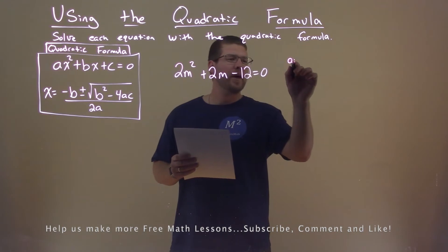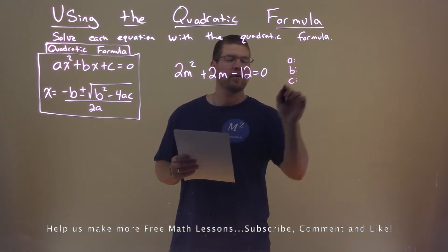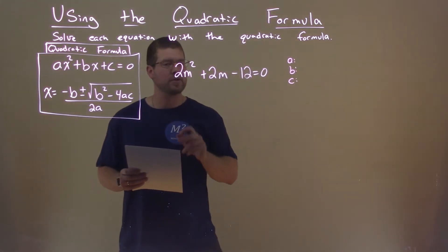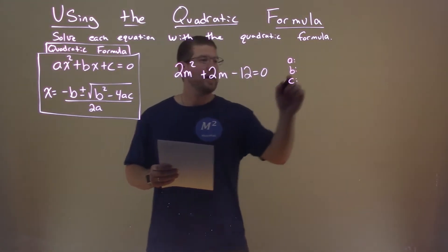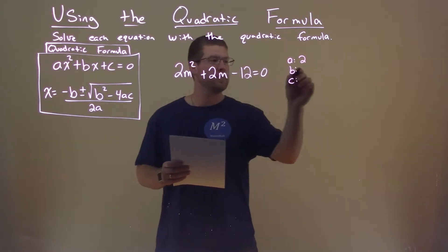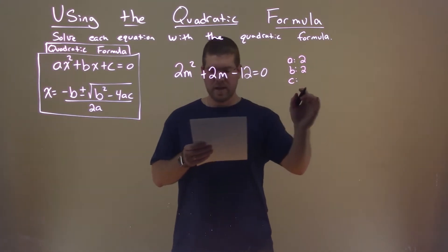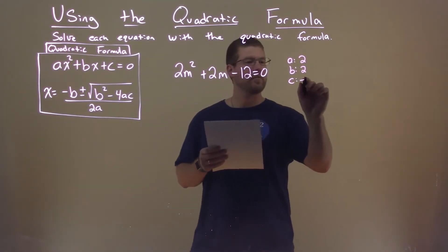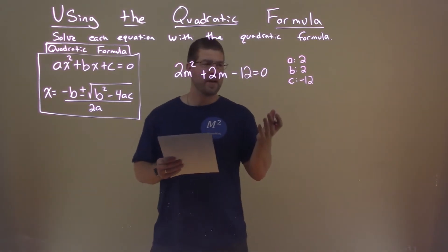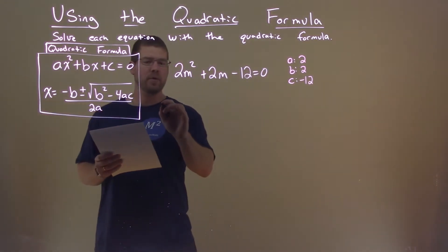We want to find our a, our b value, and our c value. Those are the coefficients. a is 2, b is also 2, and c is negative 12. So with that information, we're going to use our quadratic formula.